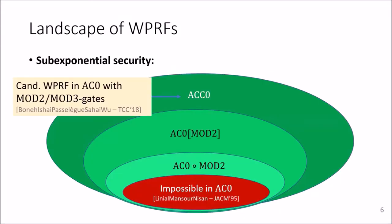So let's take a closer look at the area in between, starting with AC0 mod 2. As you already saw on the last slide, in the recent work, we brought forward the candidate weak PRF computed by an XNF formula.